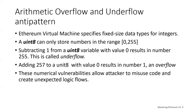These numerical vulnerabilities allow the attacker to misuse code and create unexpected logic flows. An overflow or underflow occurs when an operation is performed that requires a fixed-size number to store a value outside the range of that variable's data type. For example, adding 257 to an unsigned int results in 1. If our original value is 0 and we subtract 1, we go backwards to 255. Subtracting and going backwards is called an underflow; going over the maximum is called an overflow.